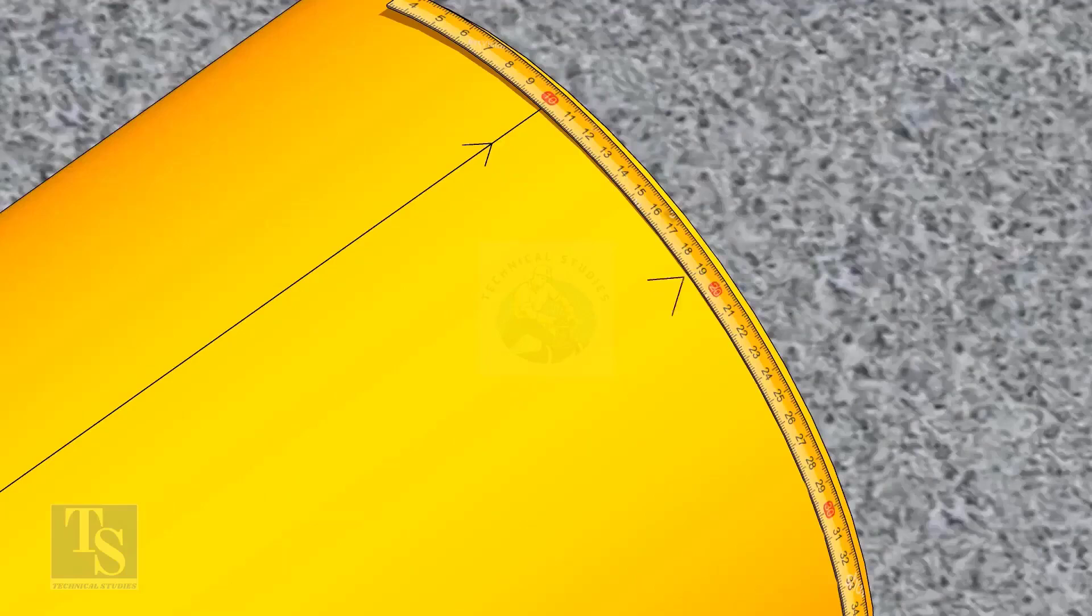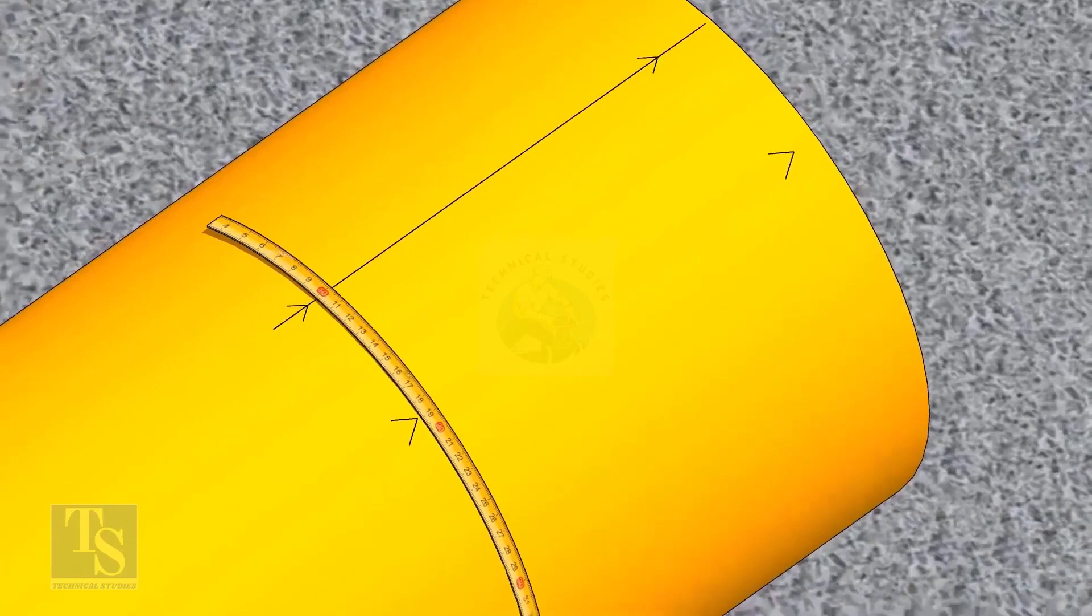Since we are rotating the flange 25 degrees anticlockwise, mark 88.5mm anticlockwise on the pipe as shown.